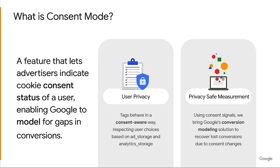Now let's talk about what consent mode is. Consent mode lets you communicate your user's cookie or app identifier consent status to Google. Tags adjust their behavior and respect users' choices. Consent mode interacts with your consent management platform or custom implementation for obtaining visitor consent, such as a cookie consent banner. Consent mode receives your user's consent choices from your cookie banner or widget and dynamically adapts the behavior of analytics, ads, and third-party tags that create or read cookies. When users deny consent, instead of storing cookies, tags send pings to Google. If you are using Google Analytics 4, Google fills the data collection gaps with conversion modeling and behavioral modeling.